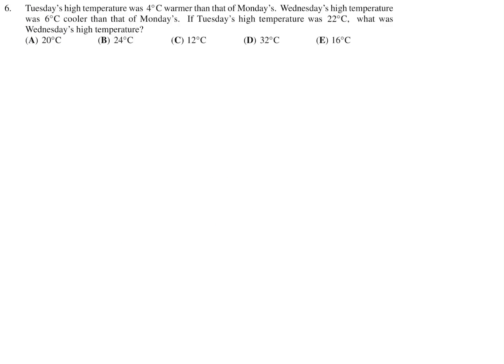Tuesday's high temperature was 4 Celsius warmer than Monday's. So if Monday is here and Tuesday is here, if Monday the temperature is X, Tuesday it would be X plus 4, because it's 4 Celsius warmer. And then Wednesday, the high temperature is 6 Celsius cooler than Monday. So X minus 6 is the temperature on Wednesday. If Tuesday's high temperature is 22, so they're saying that this is 22, what is Wednesday's high temperature? So X plus 4 is equal to 22, and therefore X is 18. So X minus 6 would be 18 minus 6, or 12 degrees Celsius. And that is choice C.